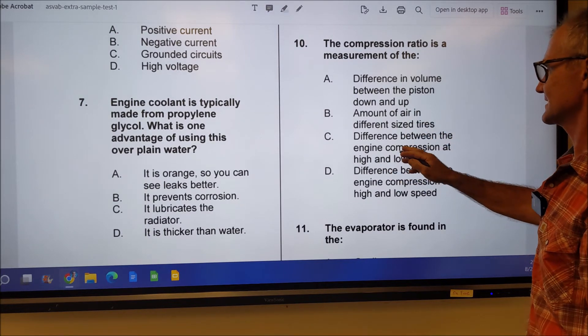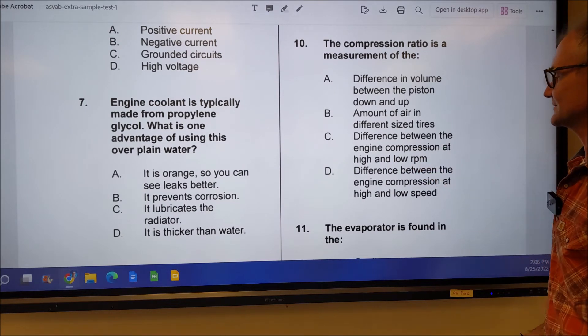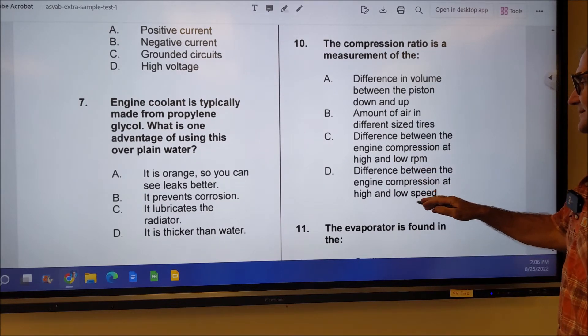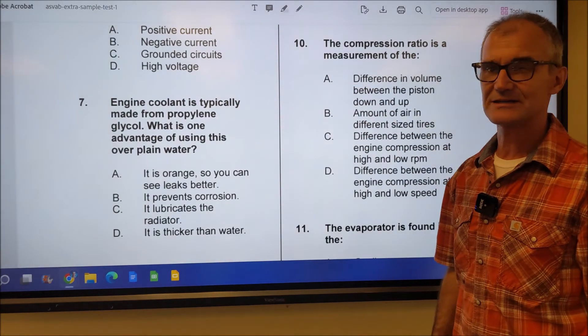Amount of air, different size tire, that doesn't make any sense. Difference between the engine compression at high and low RPM, that doesn't make sense. Yeah, this and this are the same. None of these really make any sense. So ten has to be answer A.